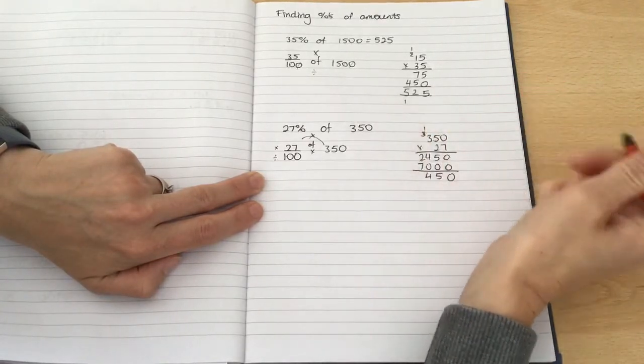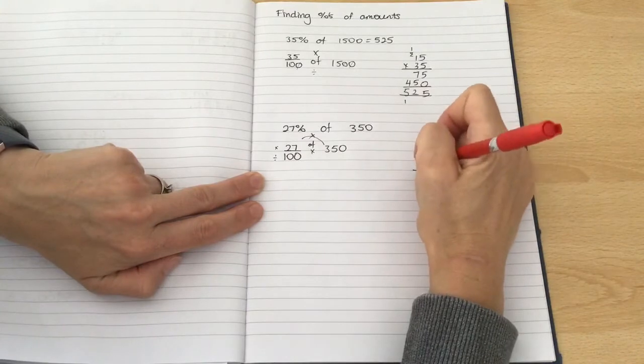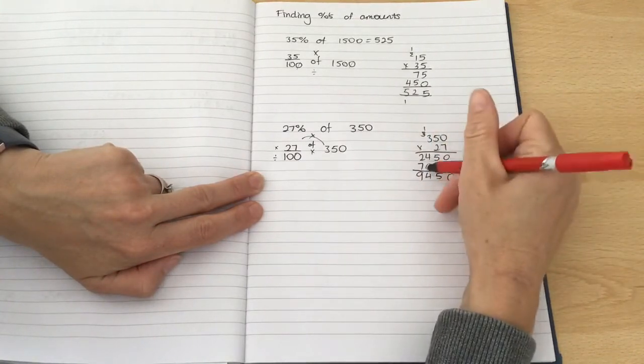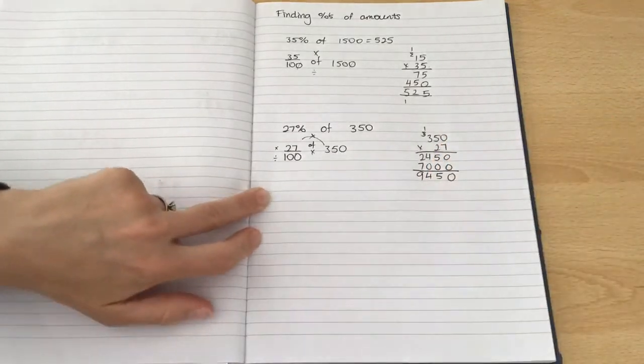I'm not going to add those together. The adding is fairly simple. So we've got 2 and 7 is 9. Double check those again. So we end up with 9,450.